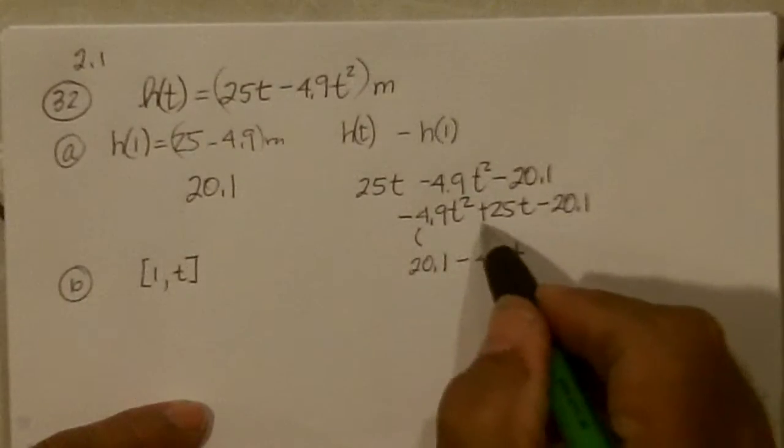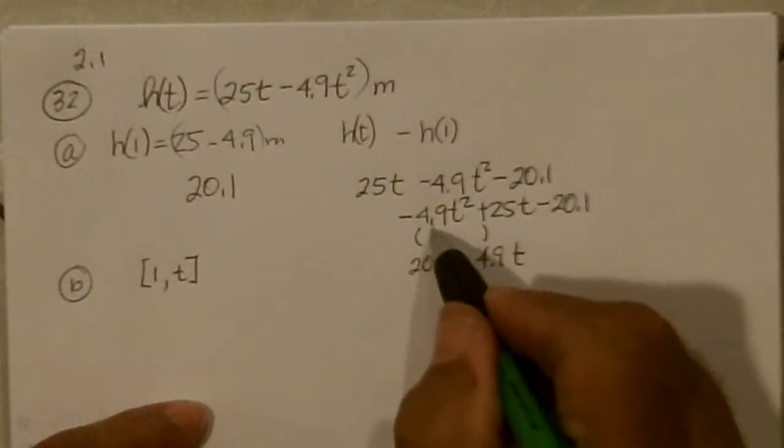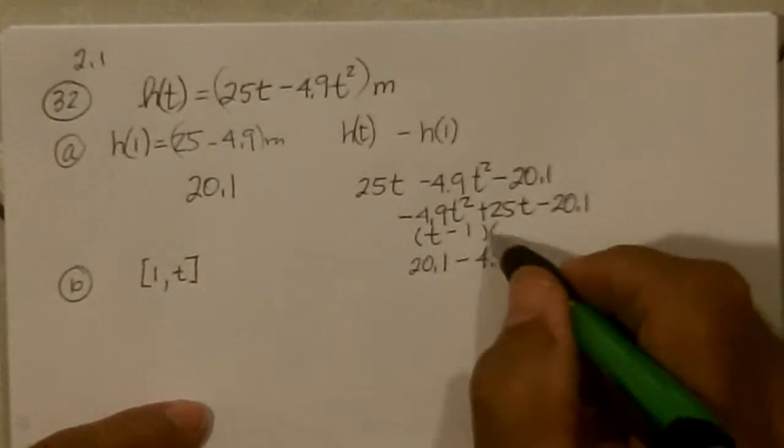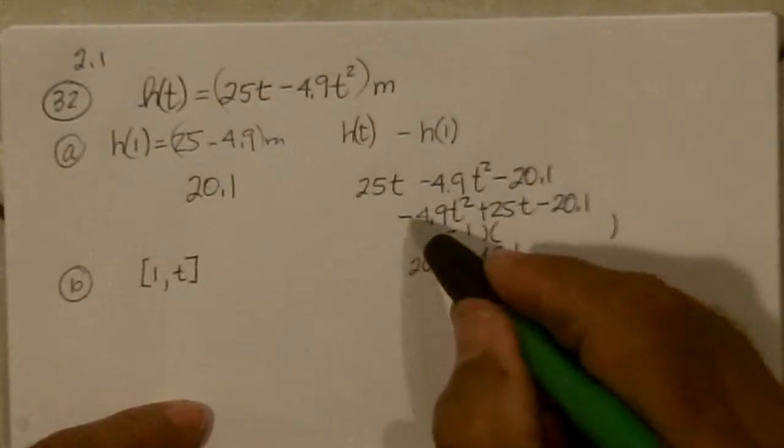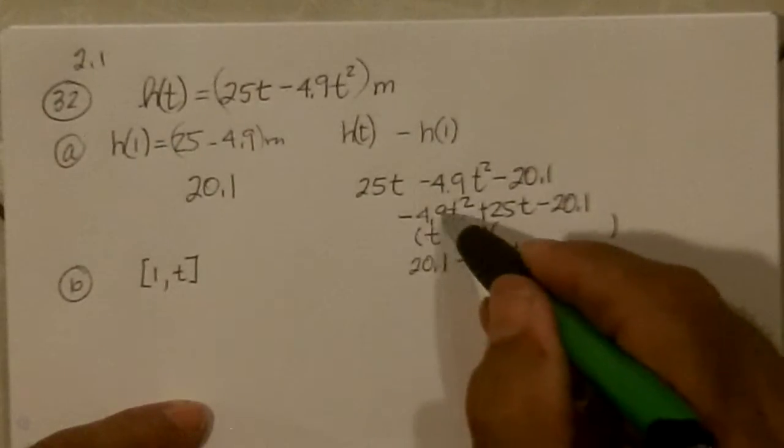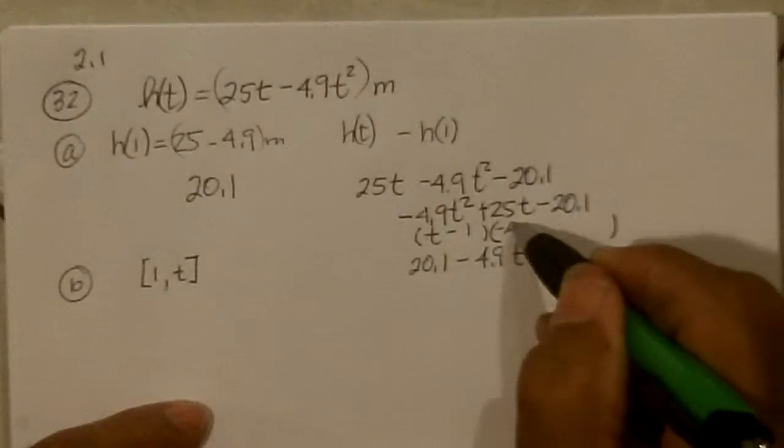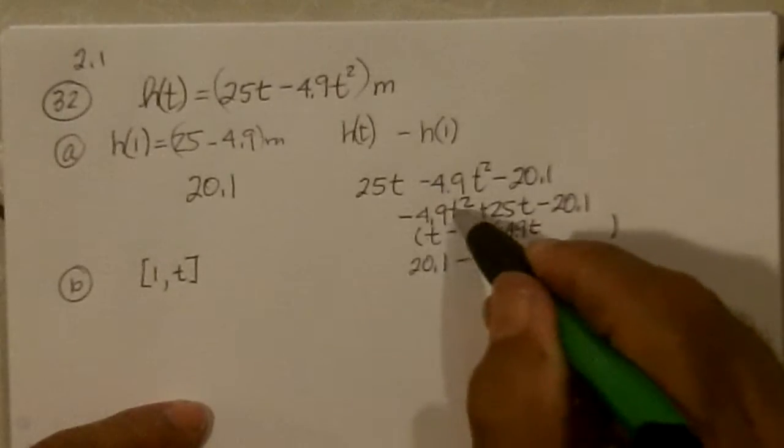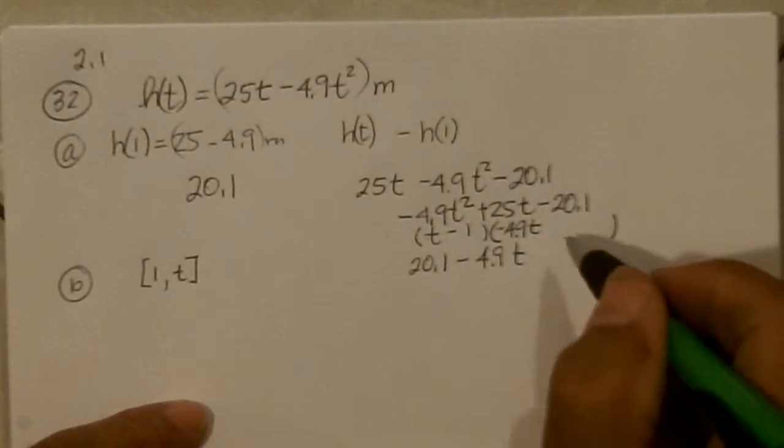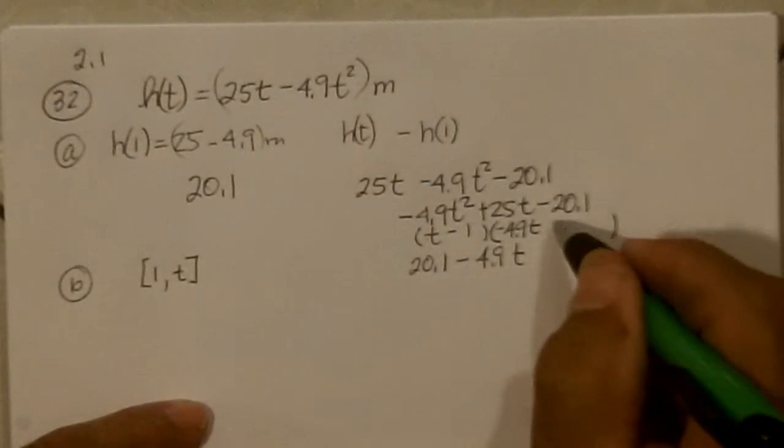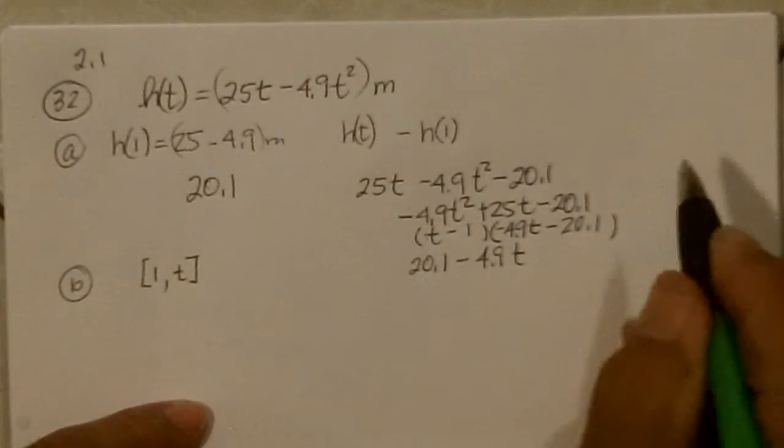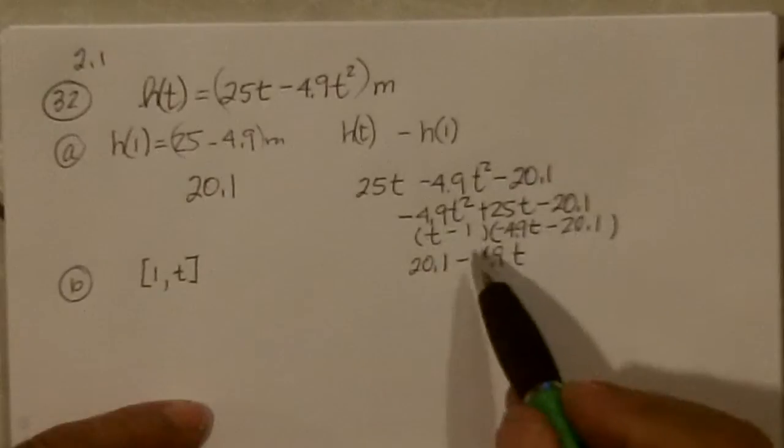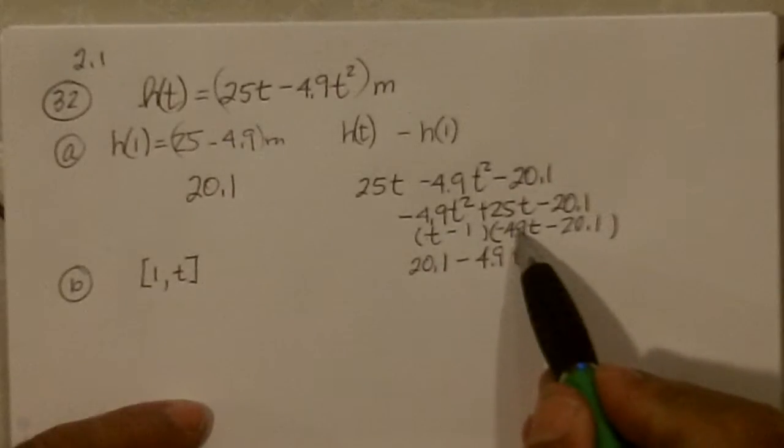And if this factors to have a (t - 1) in it, the other factor would have to be -4.9t because -4.9t times t is -4.9t². And this would have to be minus 20.1. Now the only question is, does the middle term work out? So this would be plus 4.9.